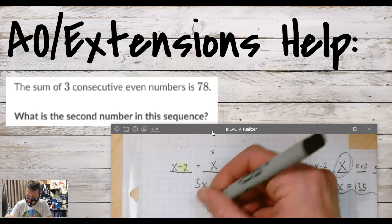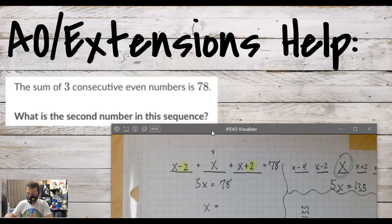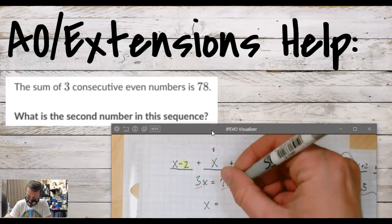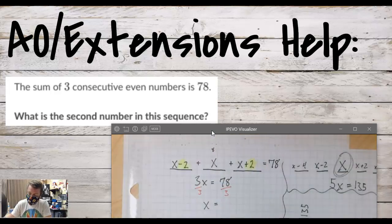But now if we want to get x by itself, we can just divide by 3. 78 divided by 3... it's probably 26, I think.